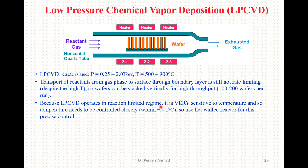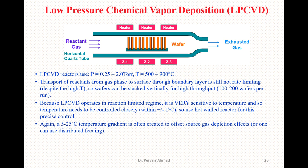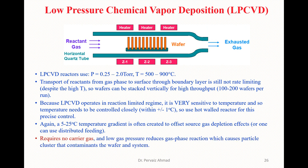Because LPCVD operates in a reaction-limited regime, it is very sensitive to temperature, so temperatures need to be controlled closely within ±1°C. Hot wall reactors are used for this precise control. A 5 to 25°C temperature gradient is often created to offset source gas depletion effects, or one can use distributed feeding. This technique requires no carrier gas, and the low waste pressure reduces gas-phase reactions which cause particle clusters that contaminate the wafers and the system.